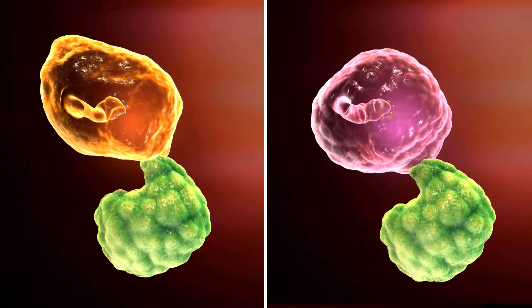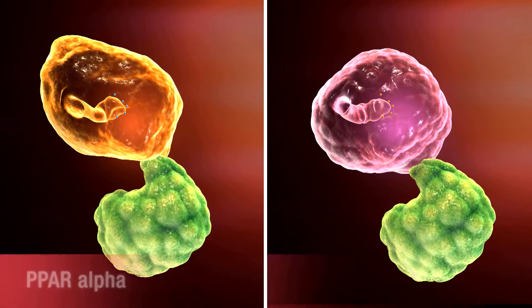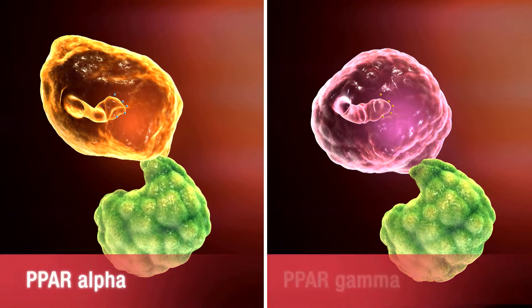Alaglitazor is a molecule that binds to and activates both PPAR-alpha and PPAR-gamma with high and balanced affinities.